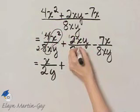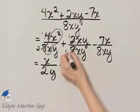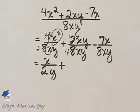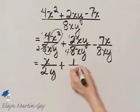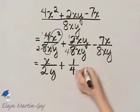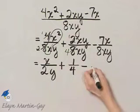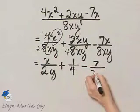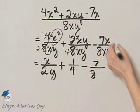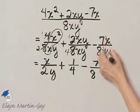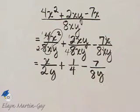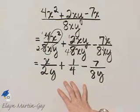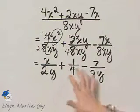Plus, here, a common factor of 2: 2 divided by 2 is 1, and 8 divided by 2 is 4. Notice the x's divide out and the y's divide out, so I have simply 1 fourth. Minus — there are no common factors in 7 and 8 — and notice these x's do divide out, and I have simply y in the denominator. So here is my quotient simplified.